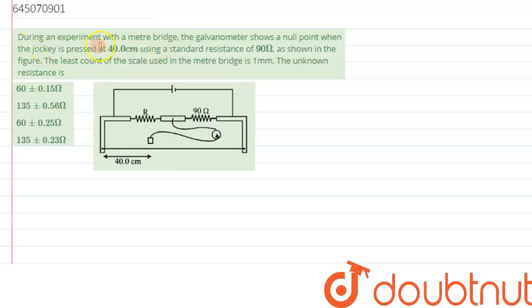During an experiment with a meter bridge, a galvanometer shows a null point when the jockey is pressed at 40 centimeter using a standard resistance of 90 ohm as shown in the figure. The least count of the scale used in the meter bridge is 1 mm.